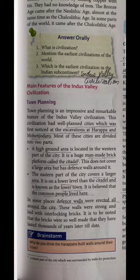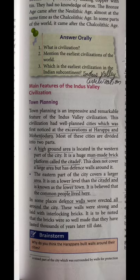In the Citadel, we find the granaries of Harappa and Mohenjodaro and the Great Bath of Mohenjodaro. The second part is the eastern part of the cities covering a large area, known as the lower level or Lower Town, where the common people lived. Defense walls were also erected all around the cities.